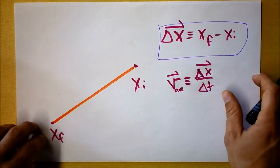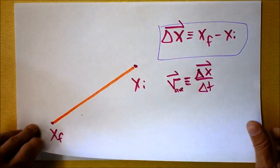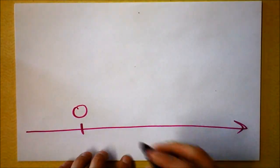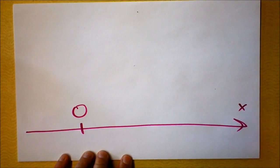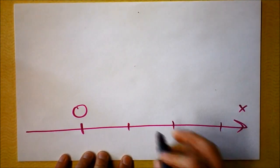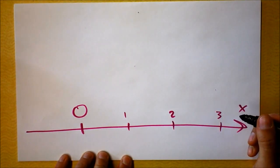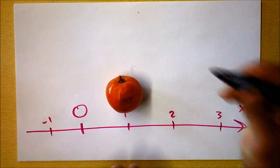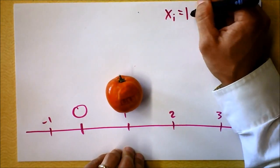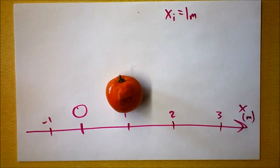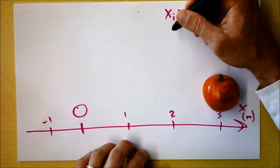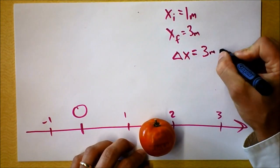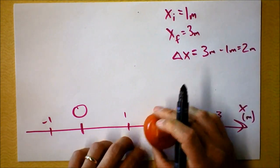Let me give you an example — it's useful to talk about a number line before we start doing displacement. Here's our number line. Zero is there, super important — we define zero. We also have to say which way is positive. In this case, that way is positive: one, two, three. And there's negative one. If the tomato starts at one meter, I can call that xi equals one meter. If the tomato starts at one and goes to three, its displacement is delta x equals three meters minus one meter, which equals two meters.